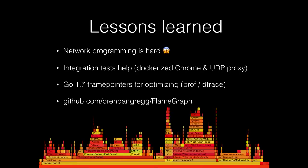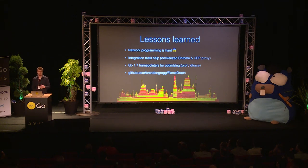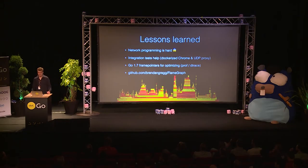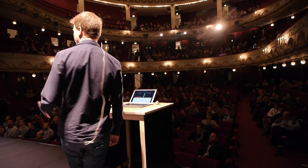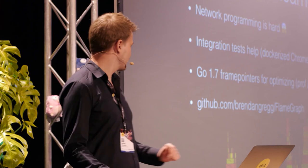There are a few interesting lessons we learned. First of all, network programming is really hard — there are quite a lot of edge cases and it's really hard to deal with all of them correctly. One of the best things that helped us is having a good integration test suite: we put Chrome in a Docker container with a UDP proxy to simulate various network setups. For profiling, two things really helped: from Go 1.7 on, you can use pprof and dtrace, which simplifies things. And there's this amazing flame graph tool, which really helps with profiling — check it out if you don't know it yet.